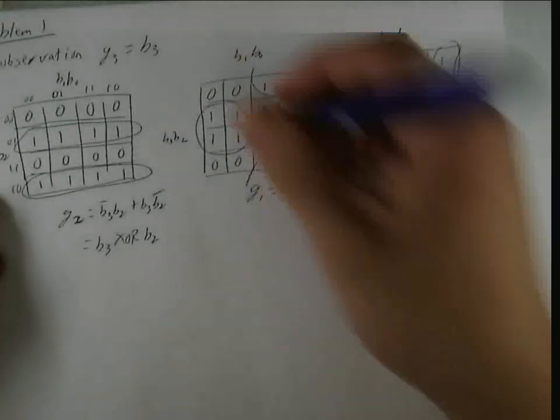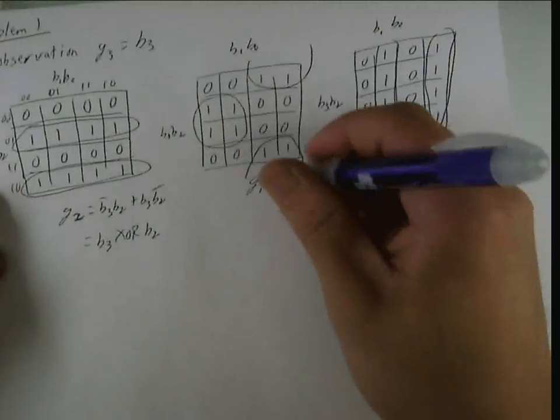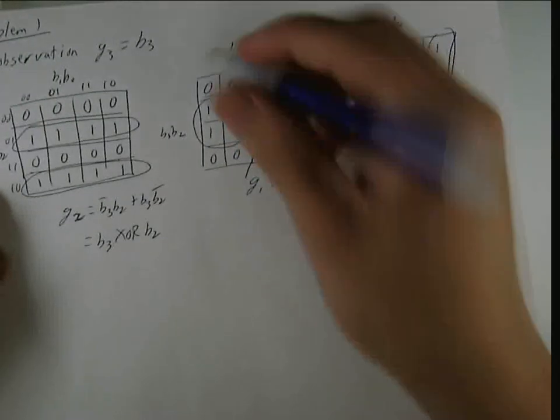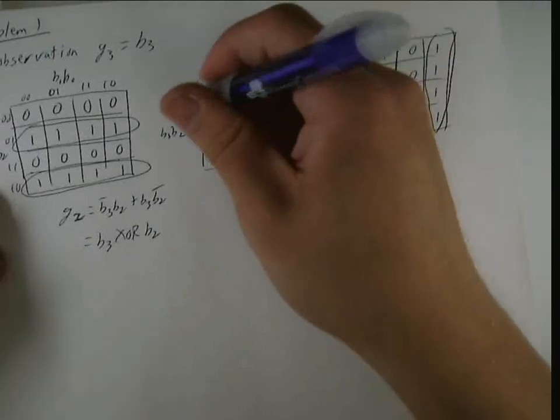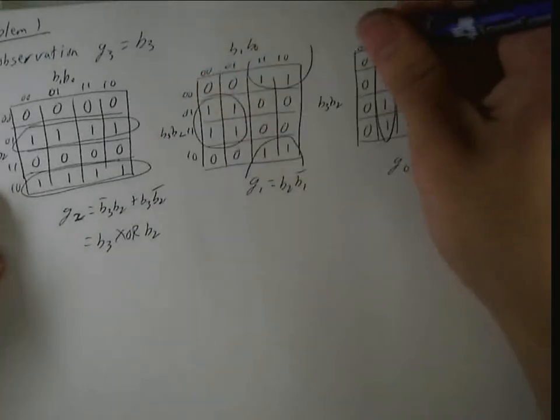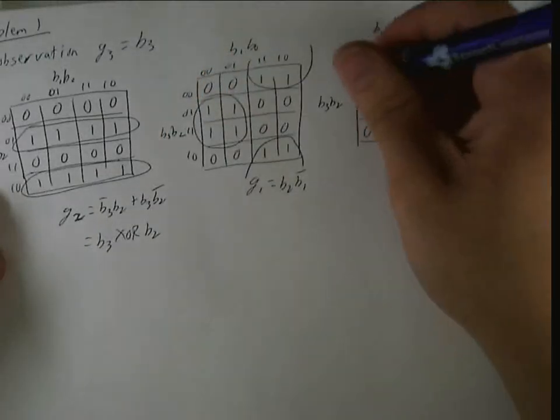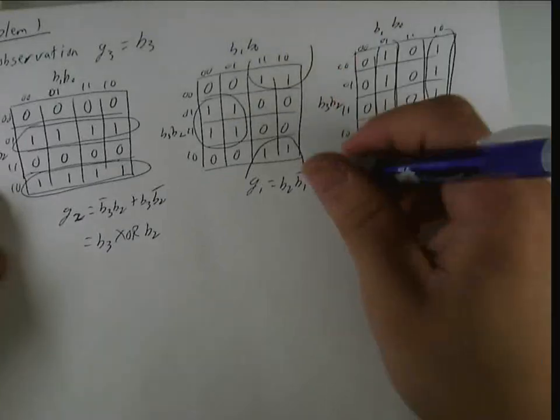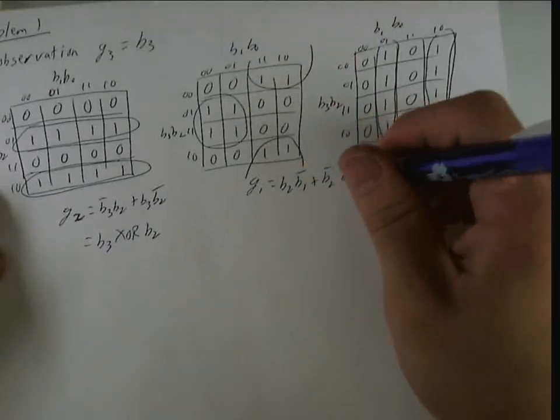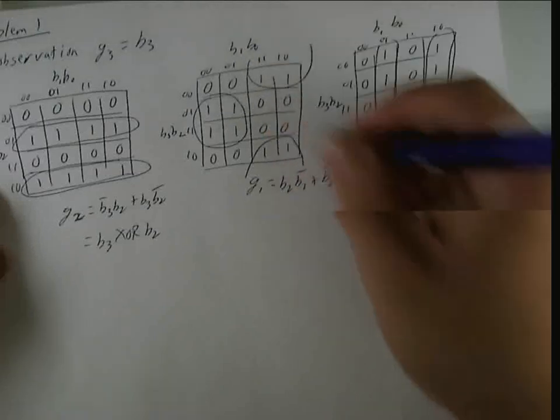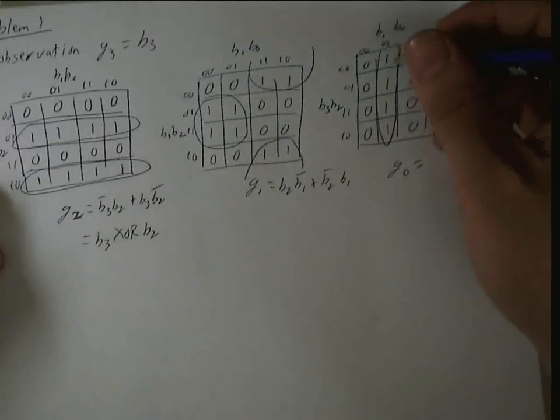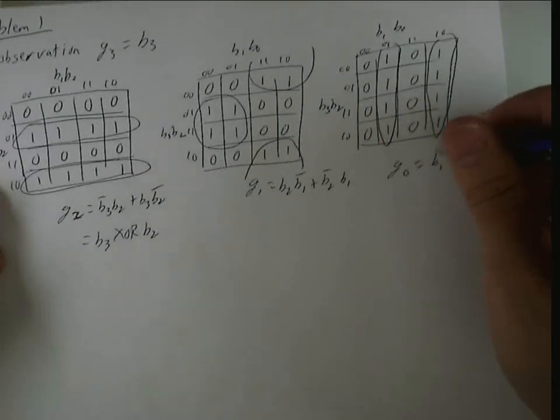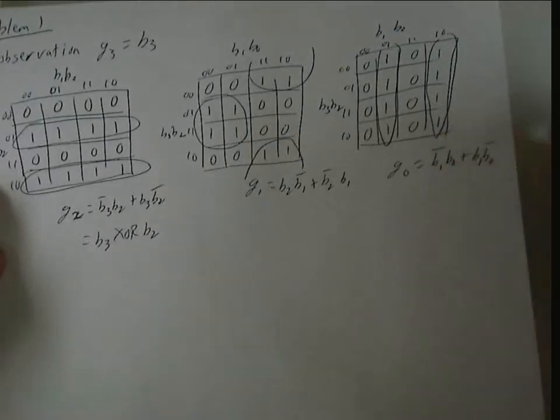G1 is going to be B2, B1 bar, this is the zeroes, I can fill that in real quick if that helps. And or B2 bar, B1, so this is the B2 bar and B1. And then I've got G0 is equal to B1 bar, B0, or B1, B0 bar.